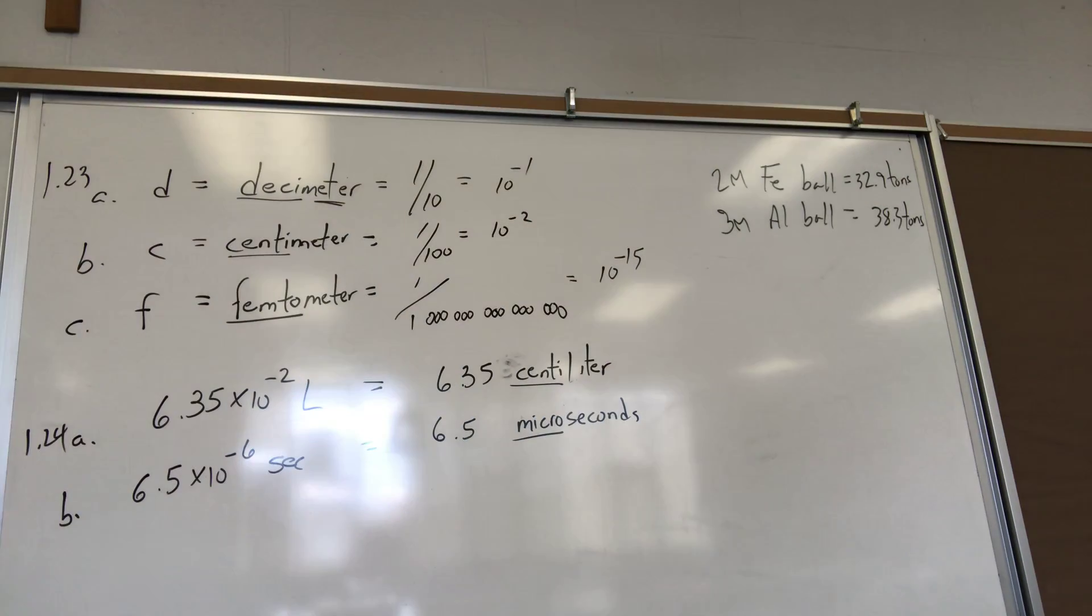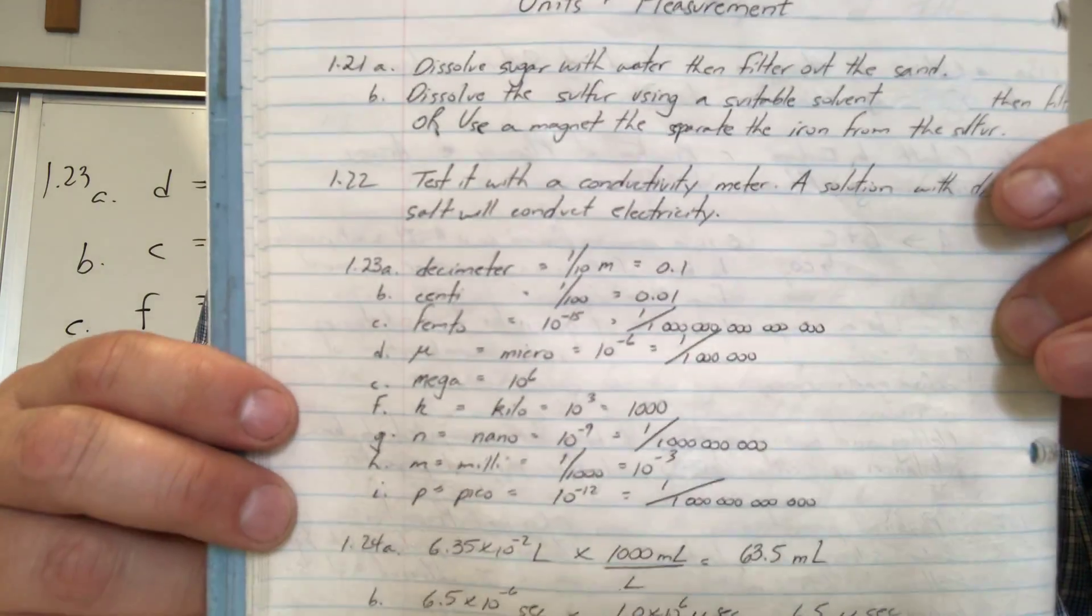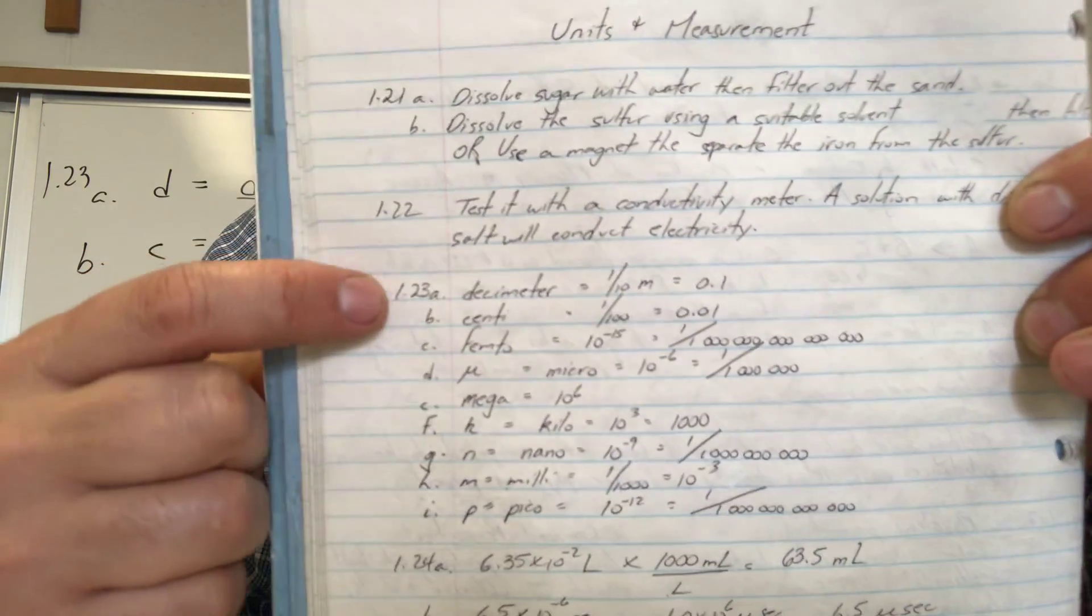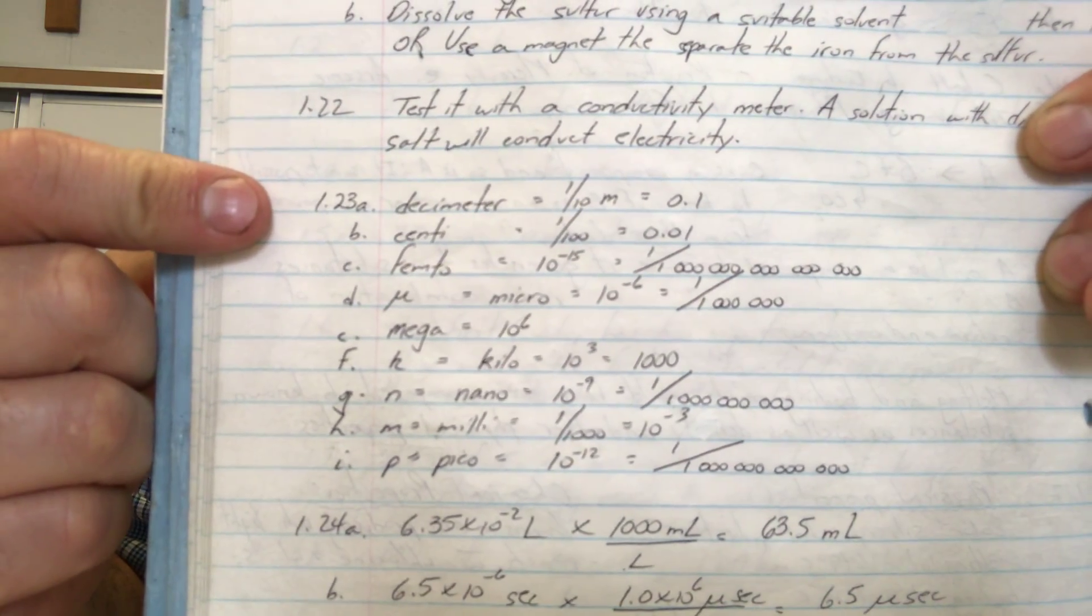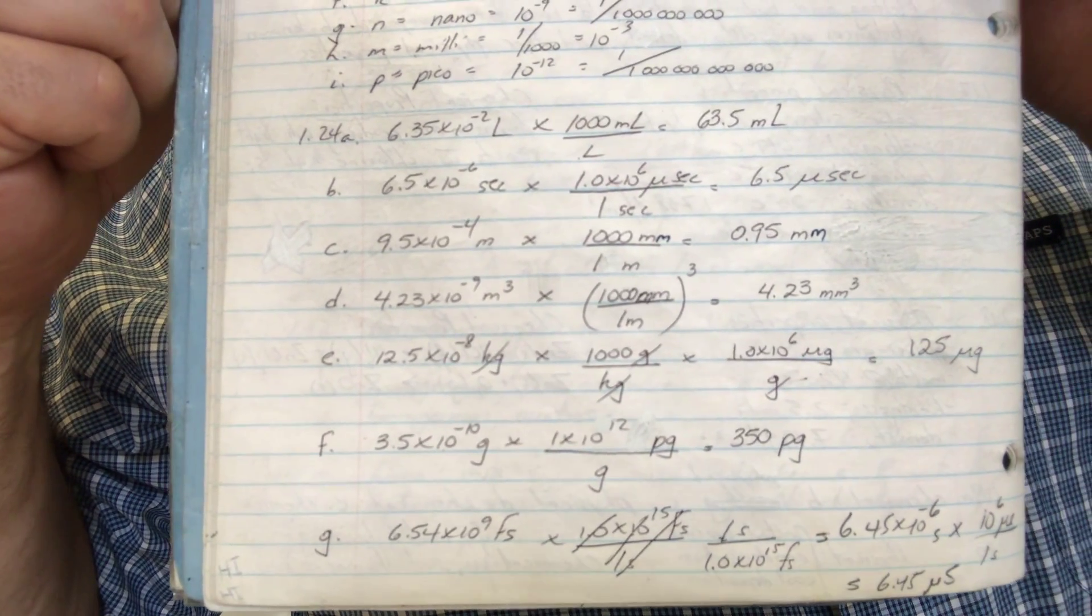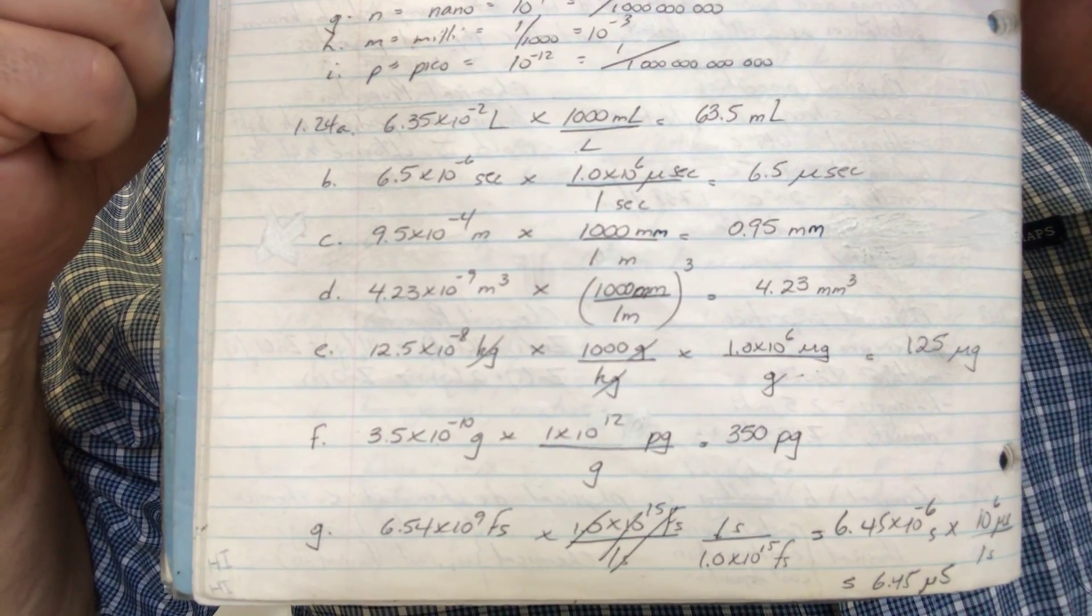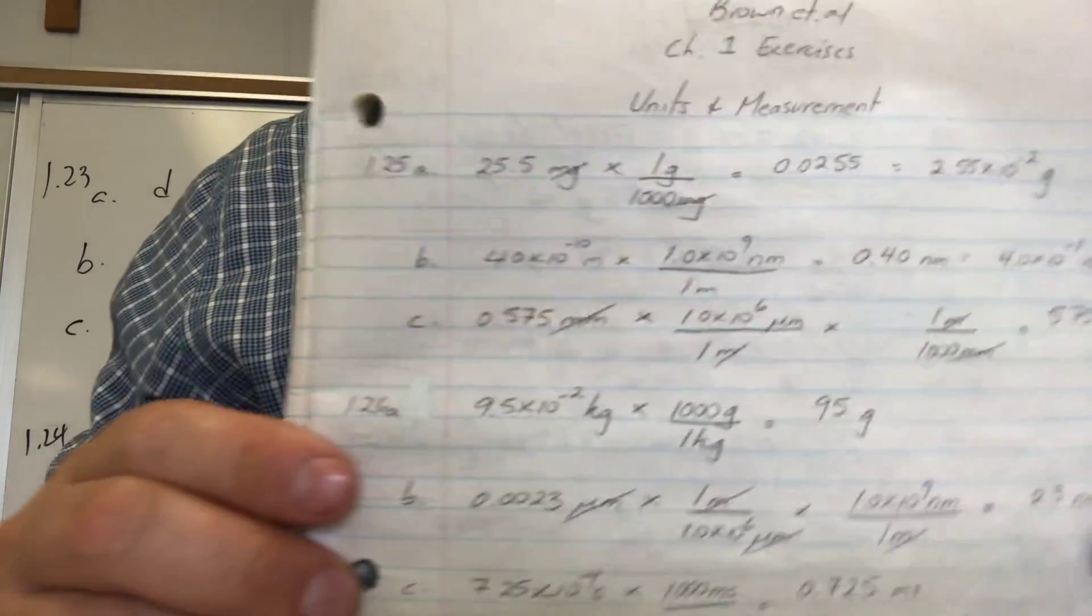Now I'm going to show you the answers so you can verify your results. So 23 starts here right there. You can pause that part. There's 24, 25, and 26 on the other side.